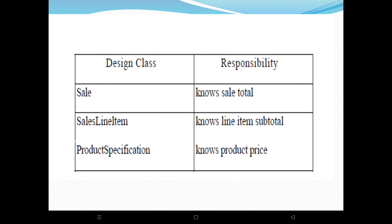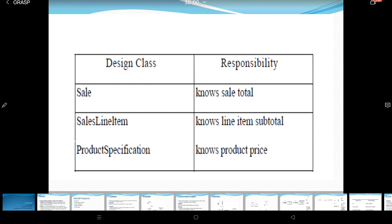Finally, three design classes are assigned with three responsibilities: Sale knows the sale total, Sale Line Item knows the line item subtotal, and Product Specification knows the product price. Today's class we discussed GRASP — General Responsibility Assignment Software Pattern — which consists of guidelines for assigning responsibility to classes and objects. Pattern is a named description of problem and solution. Creator pattern handles creation of objects; Information Expert determines where to delegate responsibility. The remaining GRASP patterns will be discussed later. Thank you, students.